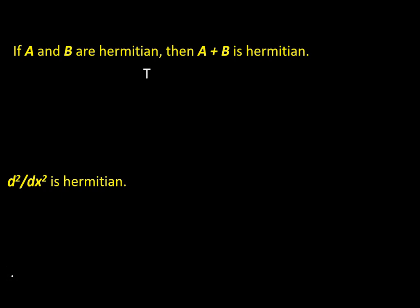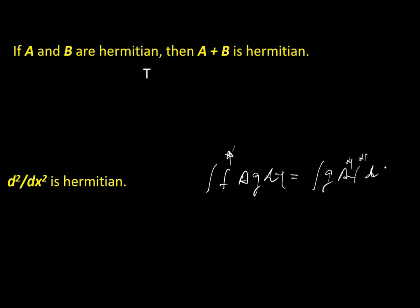d²/dx² is Hermitian. You can take it as a task: show that ∫f* (d²/dx²) g dτ = ∫g (d²/dx²)* f* dτ. This integral equality being true means d²/dx² is Hermitian. So the statement is TRUE.